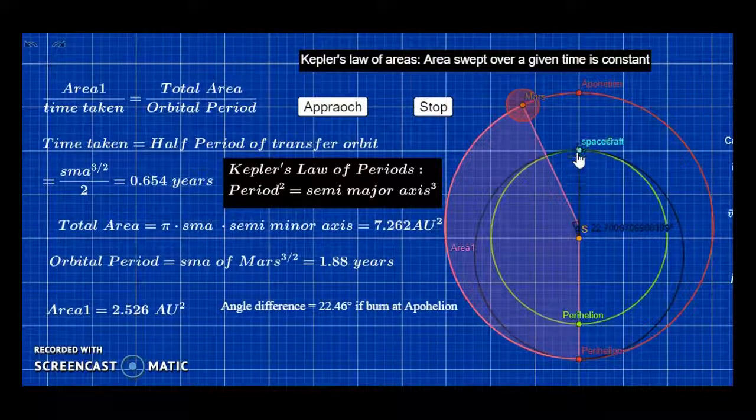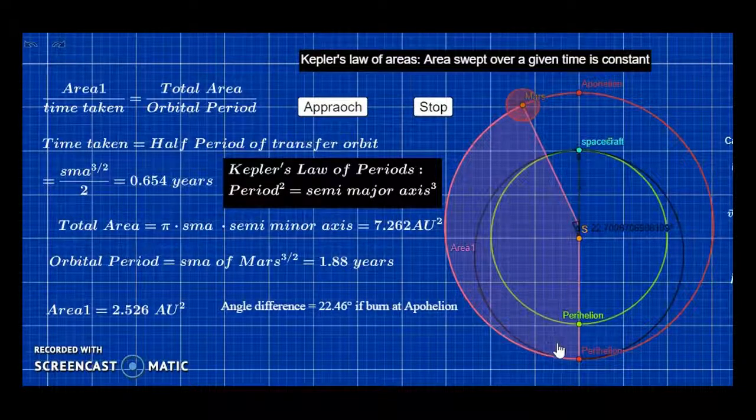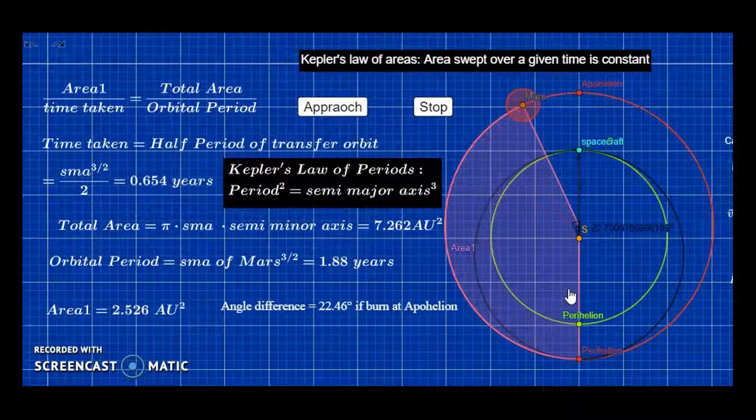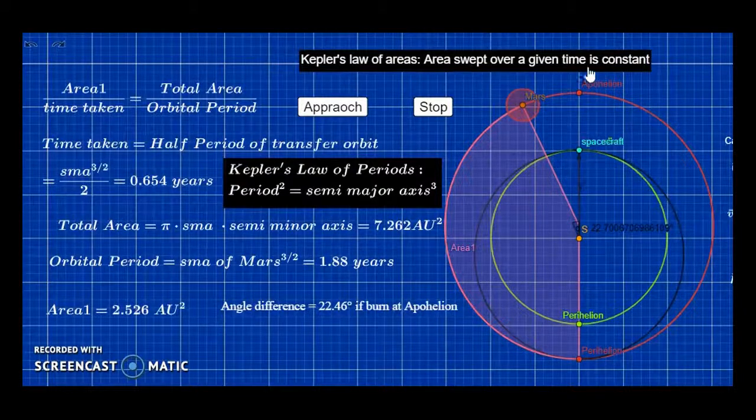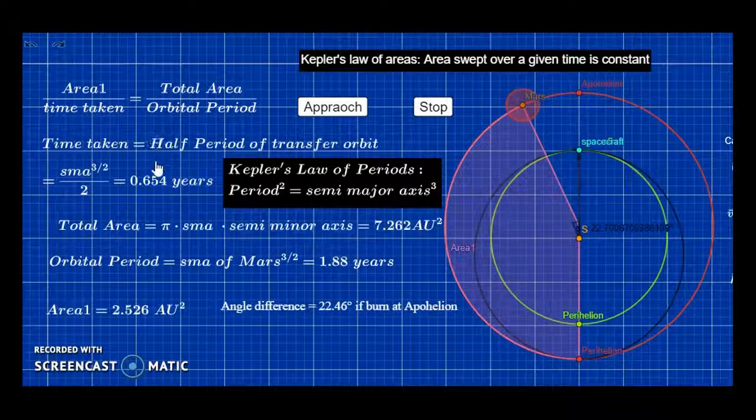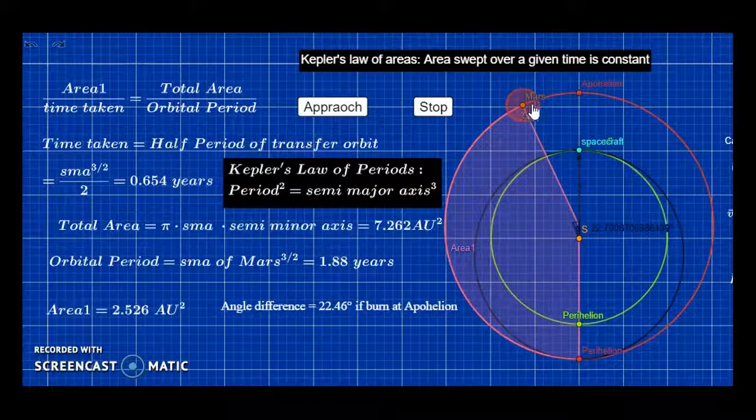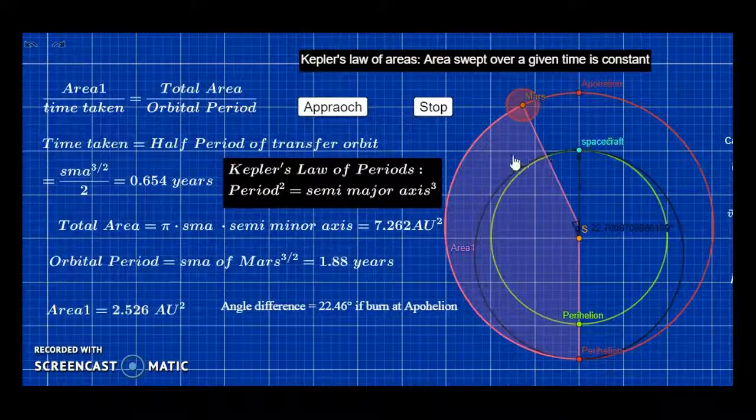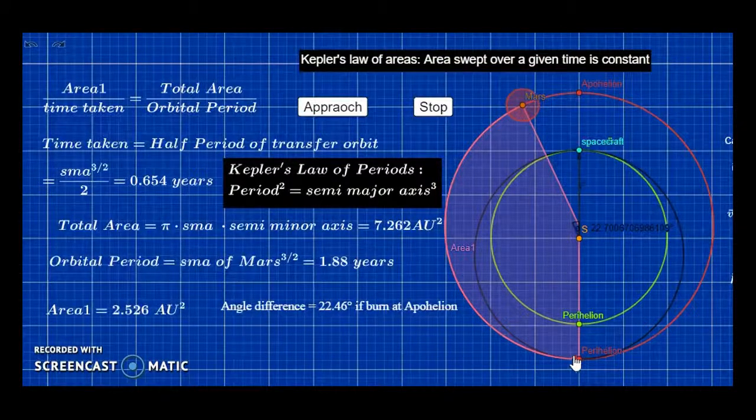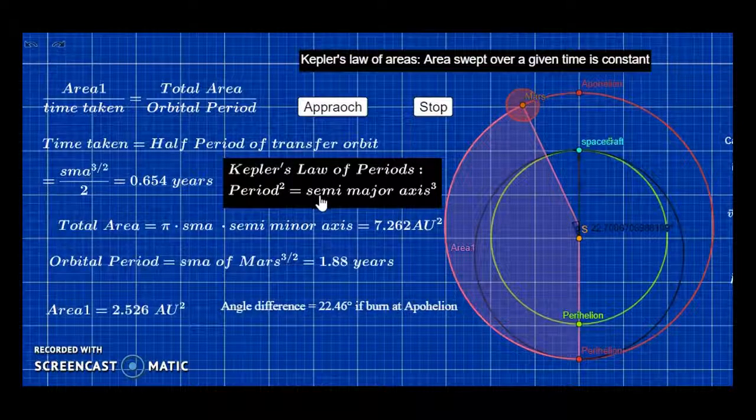Hohmann transfer allows the spacecraft to go from Earth orbit to Mars orbit, but we have to do that in the right place. To do that, we need to use Kepler's Law of Areas, which states that area swept over a given time is always constant. You find the time it takes for Mars to go to an intersection point. That time is the same time it takes for the spacecraft to go to a transfer orbit, which we can determine using Kepler's Law of Period.